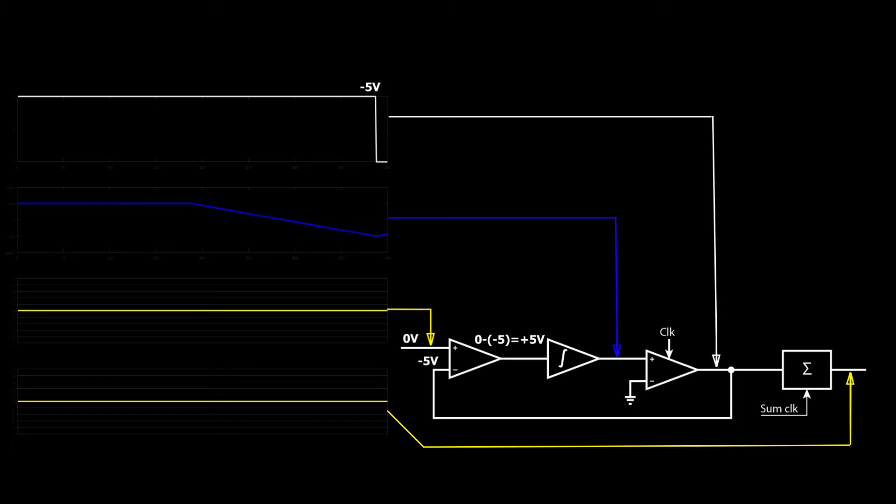So this means that the difference amplifier will now take the difference 0 minus minus 5 volts, which is plus 5 volts, and this will excite the integrator in the opposite direction. This will make the voltage at the output of the integrator to go as fast as possible into the positive territory again. And this means that the next clock tick will now flip the ADC again. And now the process just keeps going, and we have this really fast switching frequency, and that's the fastest possible frequency at the ADC output.